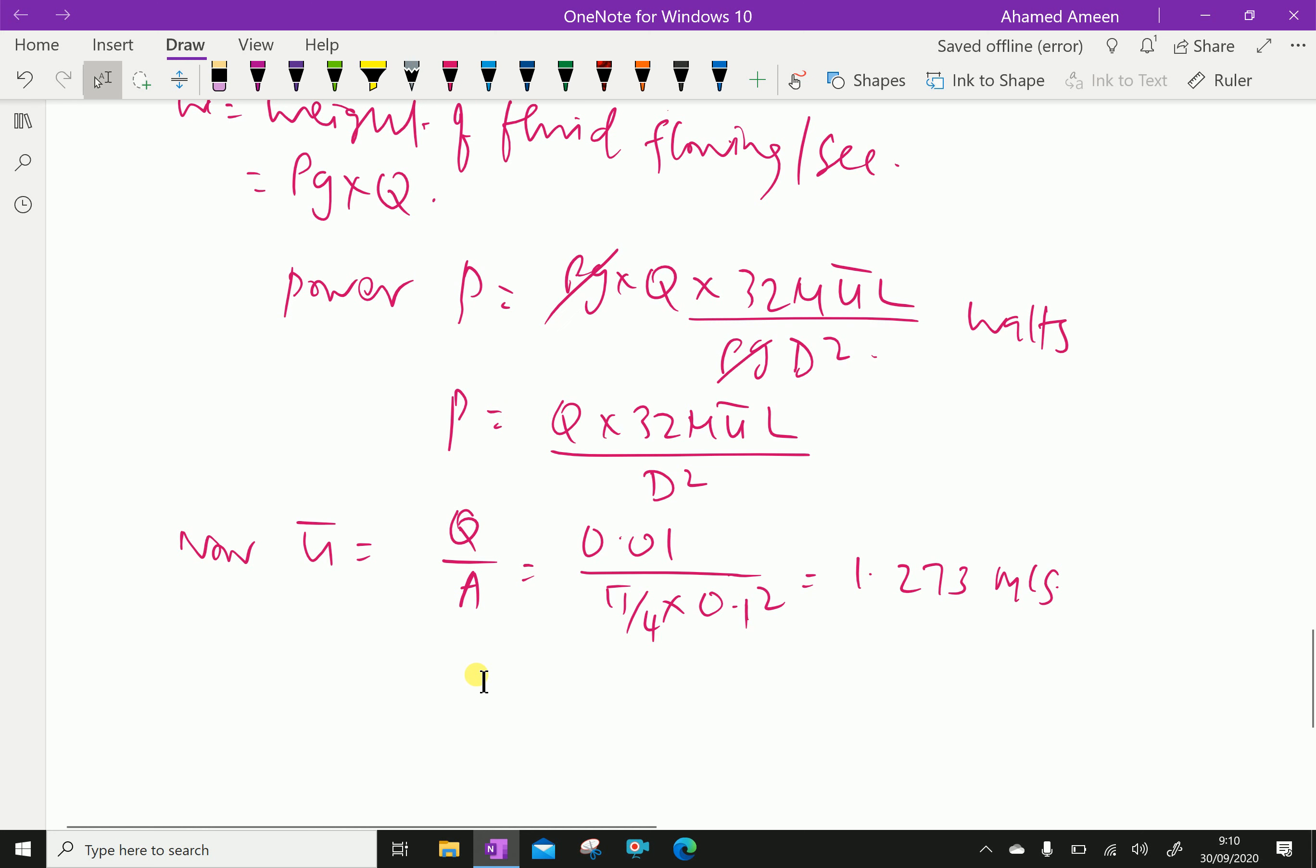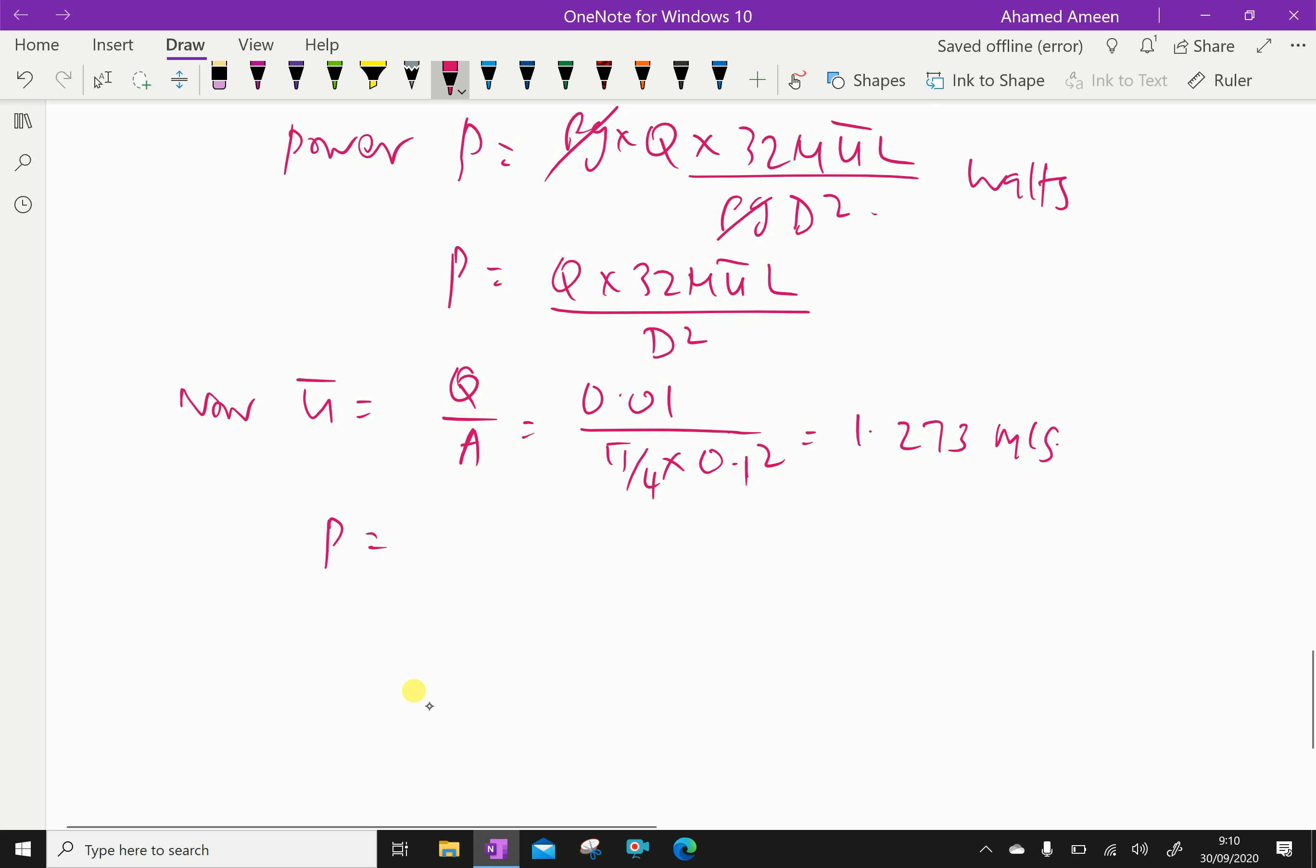Now apply this in power formula. Therefore, power equal Q. Power is 0.01 into 32, mu equal 0.8, u bar is 1.273, length is 3000 over d square.